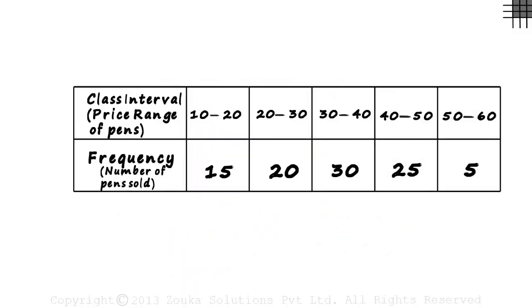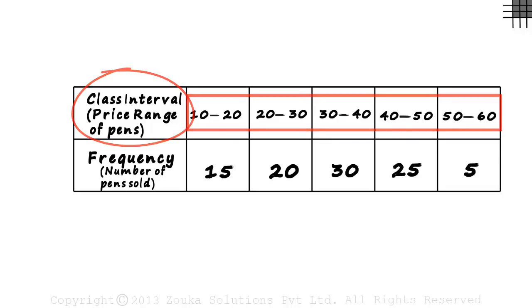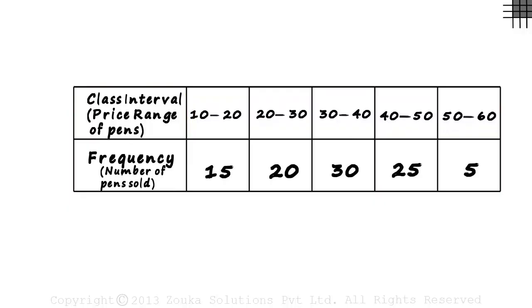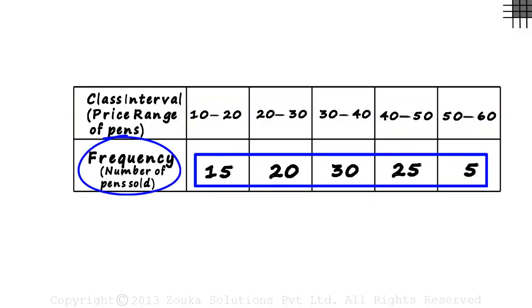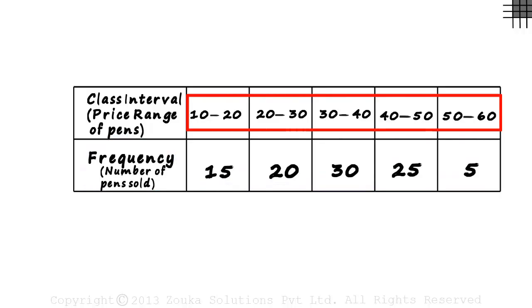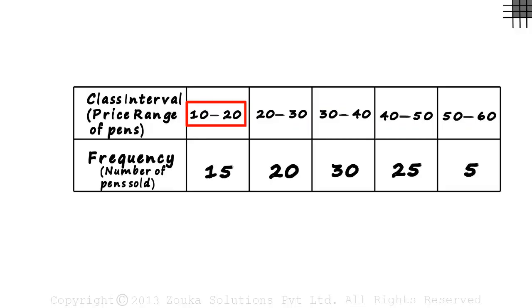In this table we have two rows. In one we will have the class interval which will be the price range of pens, and in the second we will have the frequency, that is the number of pens sold of each range. These are the different class intervals that are given. The first range is pens that cost between 10 and 20 rupees. We can see that the upper limit of one interval is equal to the lower limit of the next interval, making it continuous.